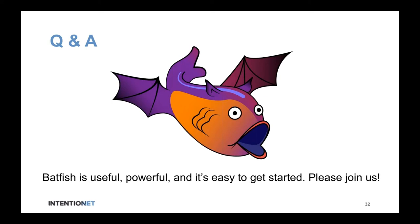Does Batfish support validation of reachability — connectivity from node A to node B in a data center environment? Absolutely. One of the first checks in the data center fabric policy was all-to-all leaf reachability. Batfish is the perfect tool if you have a requirement for global reachability in a data center. On the other hand, you can restrict access — if you have multi-tenant isolation requirements, Batfish can guarantee there's no traffic leakage between tenant A and tenant B.